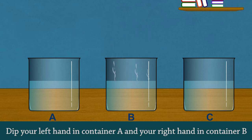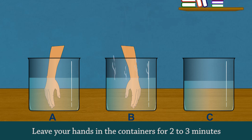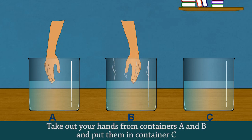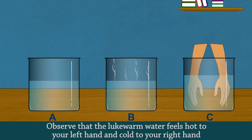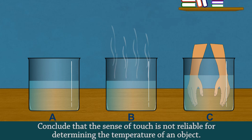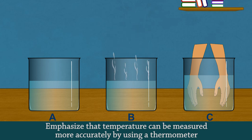Dip your left hand in container A and your right hand in container B. Leave your hands in the containers for 2-3 minutes. Take out your hands from containers A and B and put them in container C. Observe that the lukewarm water feels hot to your left hand and cold to your right hand. Conclude that the sense of touch is not reliable for determining the temperature of an object. Emphasize that temperature can be measured more accurately by using a thermometer.